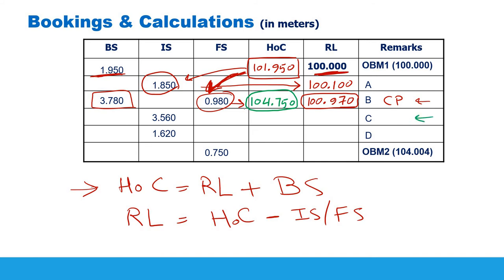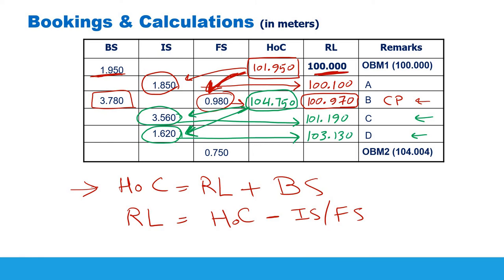From the new height of collimation we calculate the reduced level of C: 104.750 minus the intermediate sight over C (3.560) equals 101.190. To calculate the reduced level of D: 104.750 minus the intermediate sight over D (1.620) equals 103.130. Always write down your numbers to millimeter accuracy — for example I write 103.130, keeping the trailing zero to confirm I'm working to millimeter precision.